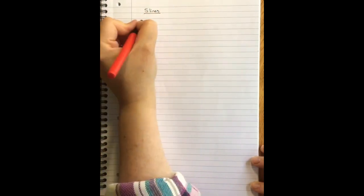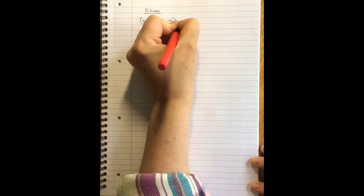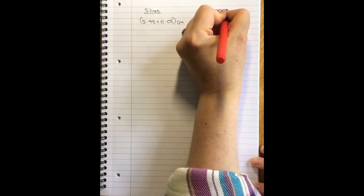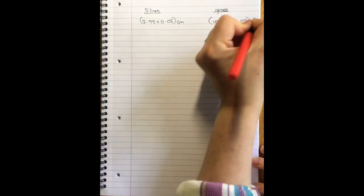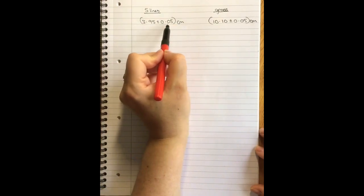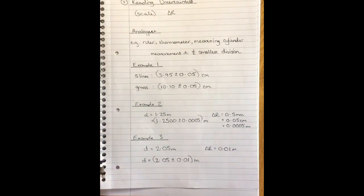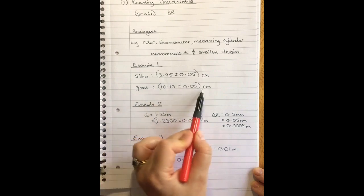Here are the two reading uncertainties that we actually took from our measurements. We've got our five lines measurement of 3.95 plus or minus 0.05 centimeters, and I had 10.10 plus or minus 0.05 centimeters. Now these uncertainties where the units of the uncertainty are the same as the measurement.